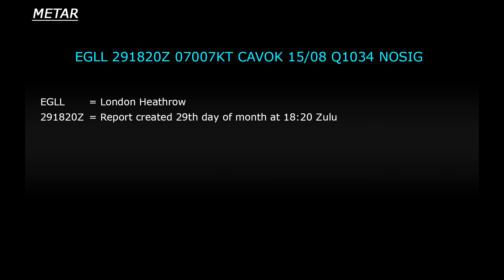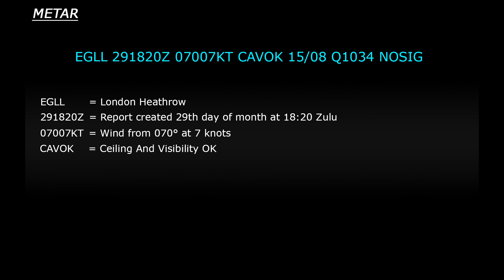The report was taken on the 29th of the month — so the 29th of September — at 1820 Zulu time, so 20 minutes past 6pm Zulu time. The wind is coming from a direction of 070 degrees at 7 knots. Now the next bit — CAVOK — is something new. What that stands for is Ceiling and Visibility is OK. So basically what that means is that there is no significant cloud coverage above or around the airport — one of those days where you look up and there's barely a cloud in the sky. A perfect day for flying.